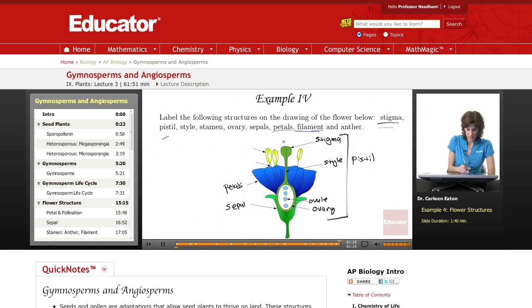Next, filament. The male reproductive structures I'll put in blue. The filament is the long, thin structure that is topped off by the anther, which is the site of pollen formation.